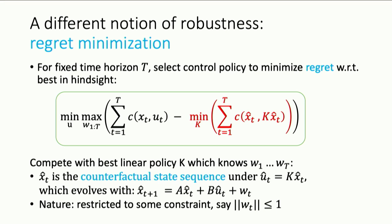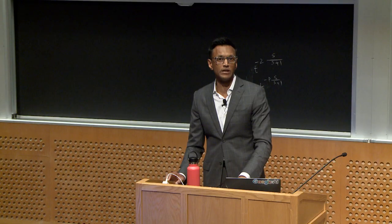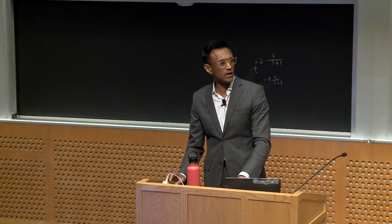It's a counterfactual notion because if I played K at time t, I wouldn't necessarily be at the same state I was actually at. So we could ask: how do I make this regret quantity small in a min-max sense? We're subtracting off this term in red, and this x-hat of t in this notion is the evolution of the system under a different model.